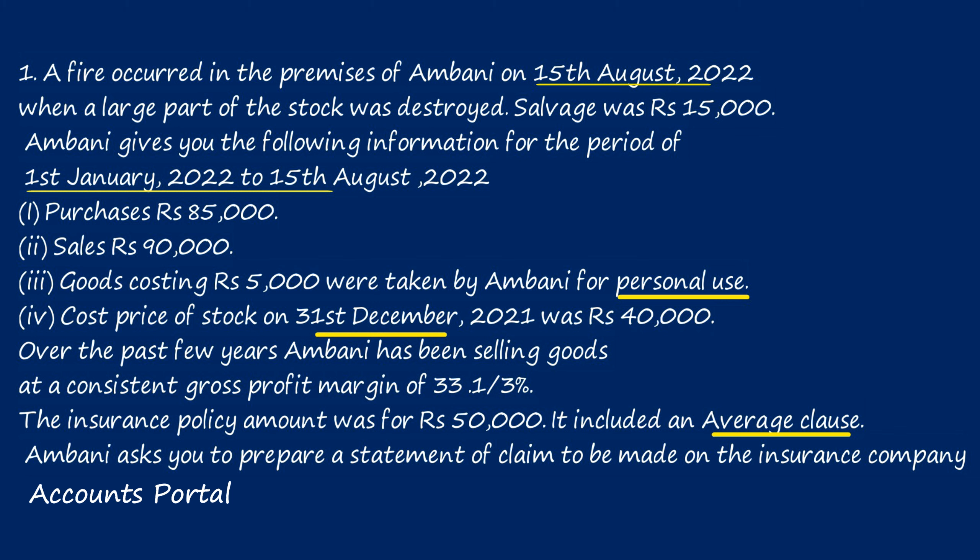Cost price of stock on 31st December 2021 was ₹40,000 — last year's closing stock is current year's opening stock. Ambani has been selling goods at a consistent gross profit margin of 33⅓%. When the rate of gross profit is given, we do not need to prepare the previous year's trading account; we apply it directly on sales. The insurance policy amount was ₹50,000, which included an average clause. Ambani asks you to prepare a statement of claim to be made on the insurance company.